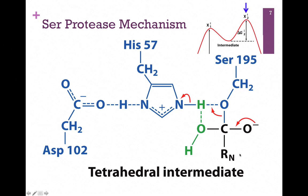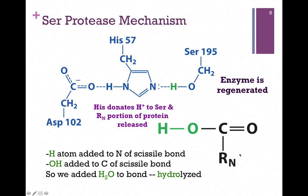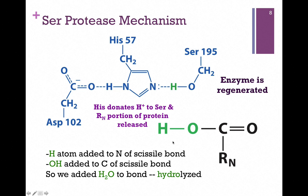We must resolve the structure, and histidine can now donate that proton back to serine. We have accomplished our goal of breaking the peptide bond, and the active site looks just like it did when we began — the enzyme has been regenerated. The N-terminal portion of our peptide is released. In the first case we added a hydrogen atom to the nitrogen of the scissile bond, and in this case we added OH to the carbon of the scissile bond. Overall, we simply added water to the bond — it was hydrolyzed, that is, lysed by adding water.